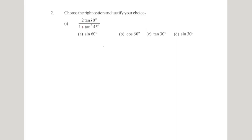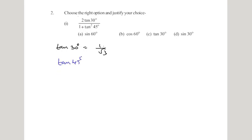The first question is: 2·tan30° divided by (1 + tan²45°). To solve this, we must know the values of tan30° and tan45°. We know that tan30° is 1/√3 and tan45° is 1.